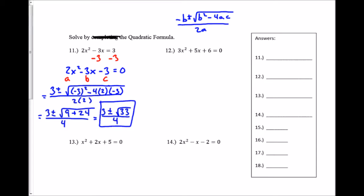In number 12, this one's already set up nicely for us. I can see my a, my b, and my c value. a is 3, b is 5, c is 6. So I'm going to go right to plugging this into my quadratic formula. So the opposite of b, b was a positive 5, so the opposite of that is negative 5, plus or minus the square root of b, which is 5, squared, minus 4 times a, which is 3, times c, which is 6, all over 2 times a, which once again is 3.